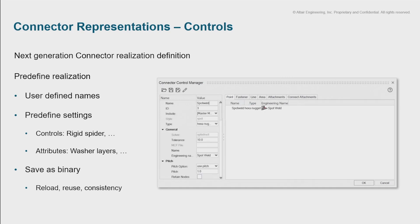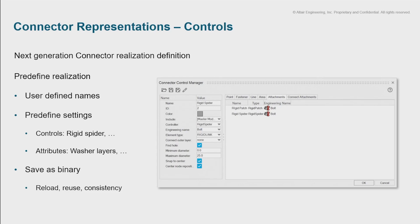This is just an example of what the control manager looks like. On the left hand side in this image — it's now the right hand side in later versions — you have all the attributes assigned to a particular control, and then it's organised per style of connector. So a tab for fasteners, a tab for line connectors, a tab for point connectors and attachments and that sort of stuff.